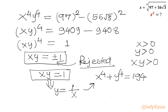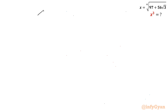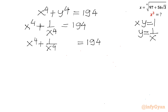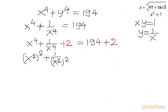Substituting y equals 1 over x into the equation: x power 4 plus 1 over x power 4 equals 194. Now I will add 2 to both sides. Writing x power 4 as (x squared) whole square and 1 over x power 4 as (1 over x squared) whole square, the 2 becomes 2 times x squared times 1 over x squared. So the right-hand side is 196.